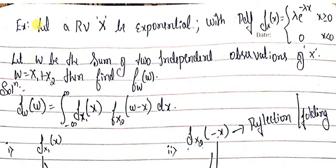The question gives us x as a random variable having an exponential distribution with pdf f(x) = lambda times e to the power minus lambda x for x greater than or equal to zero, and zero for x less than zero. Our job is to find the pdf of W, which is the sum of two independent observations of x, so W = X1 + X2.